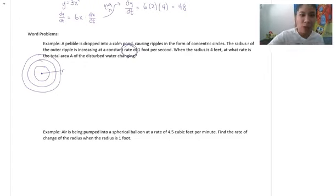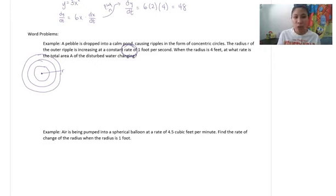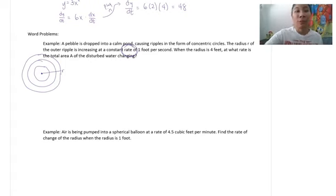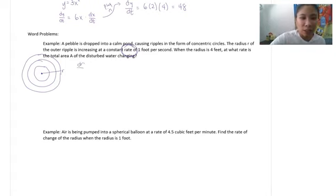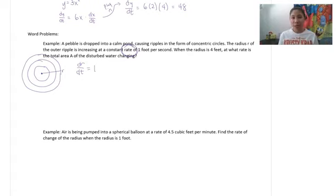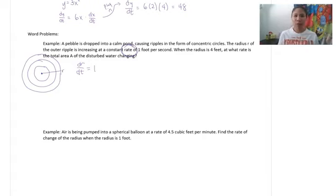Anytime they talk about a rate, that's like a slope — an average rate of change is a slope, and a slope is a derivative. So when they say the radius is increasing at a constant rate of 1 foot per second, I define this as dr/dt equals 1. Anytime it's a rate, we use the dt notation. Then when the radius is 4 feet, that means r equals 4.